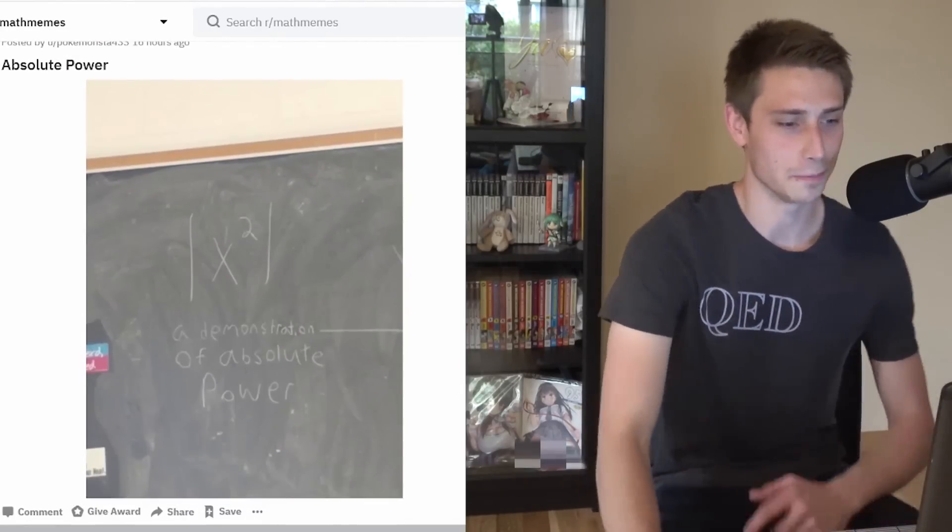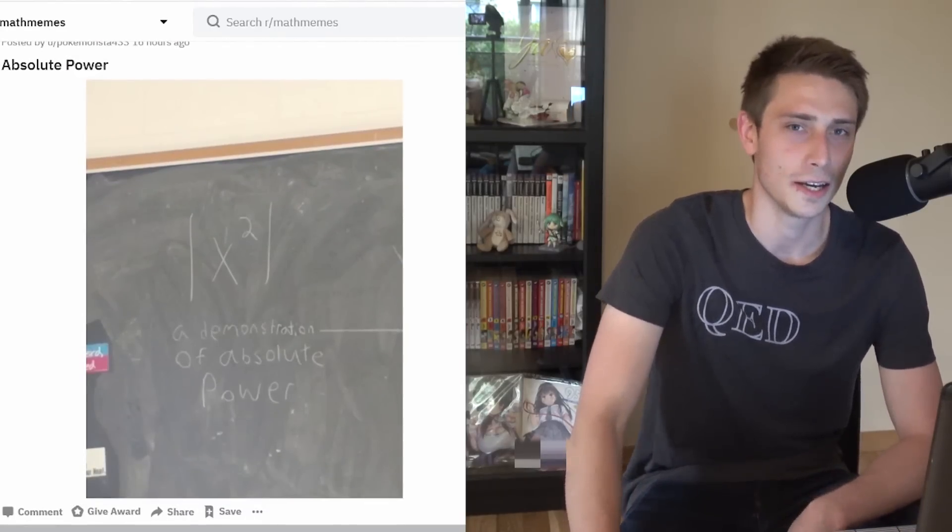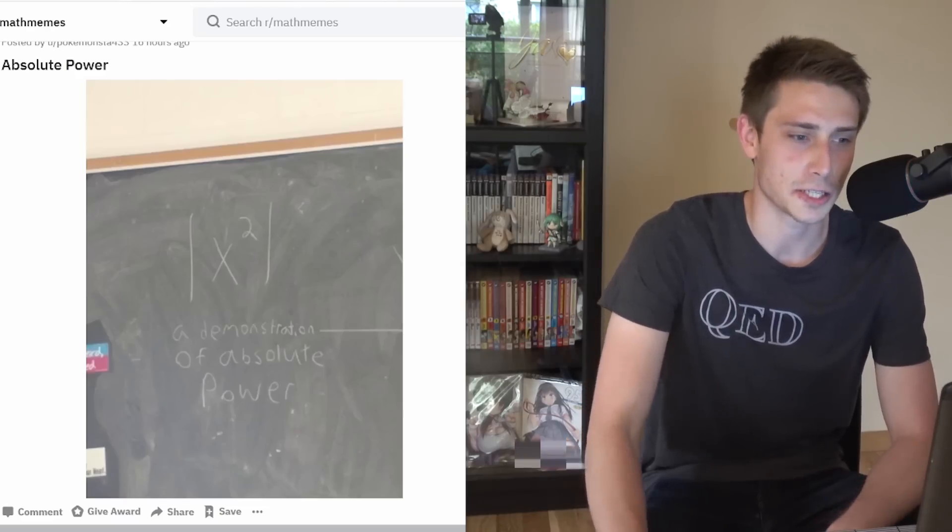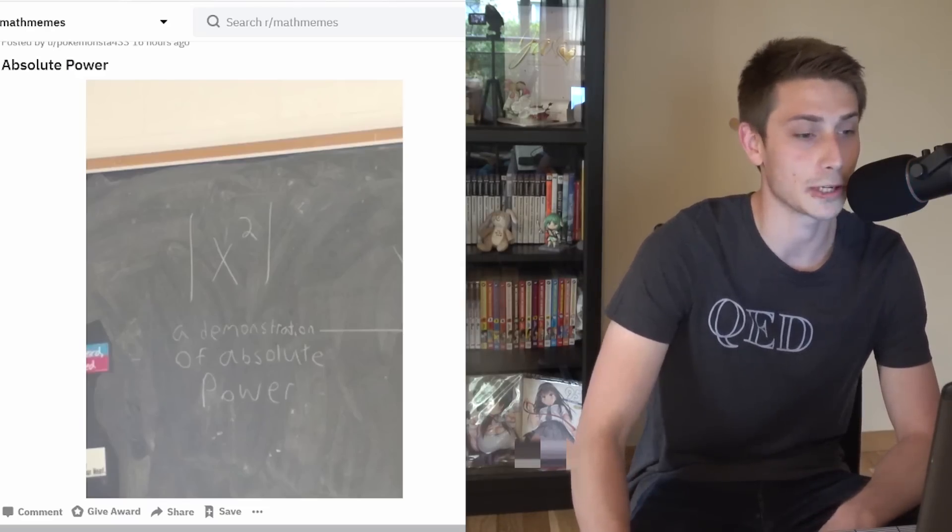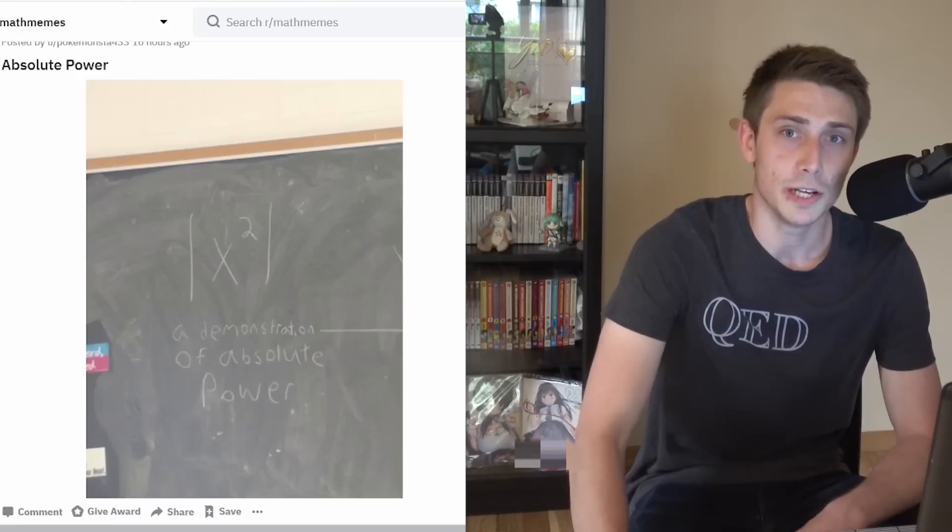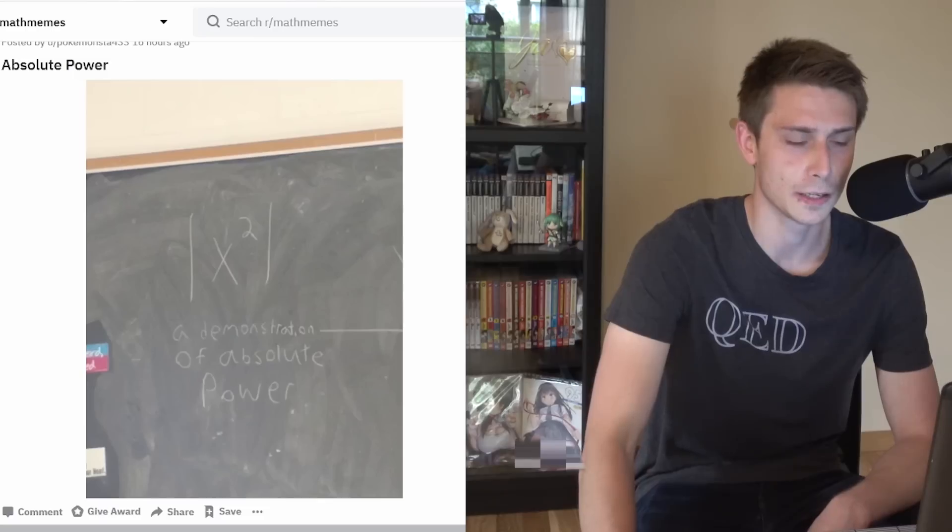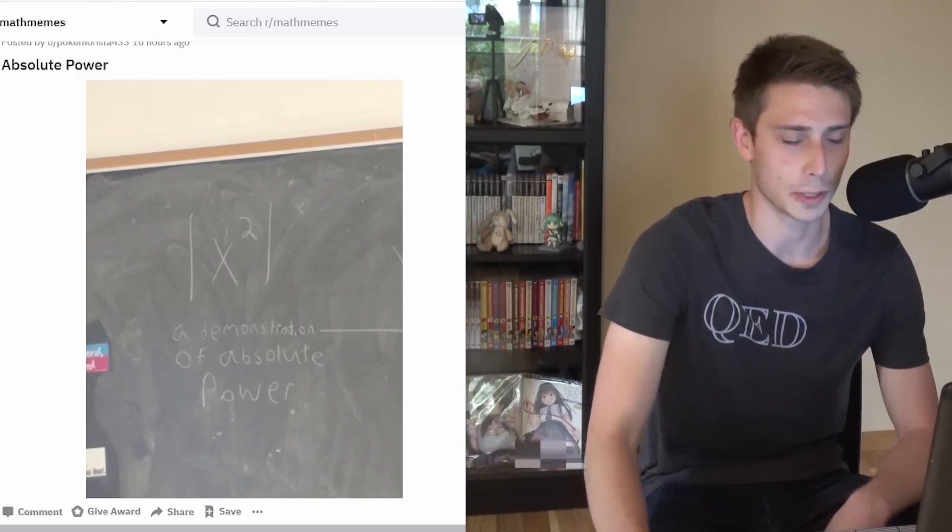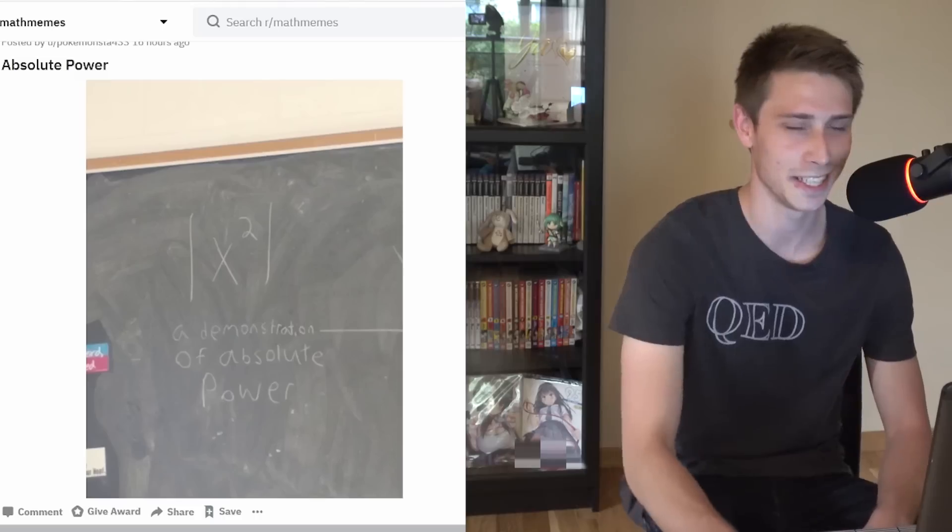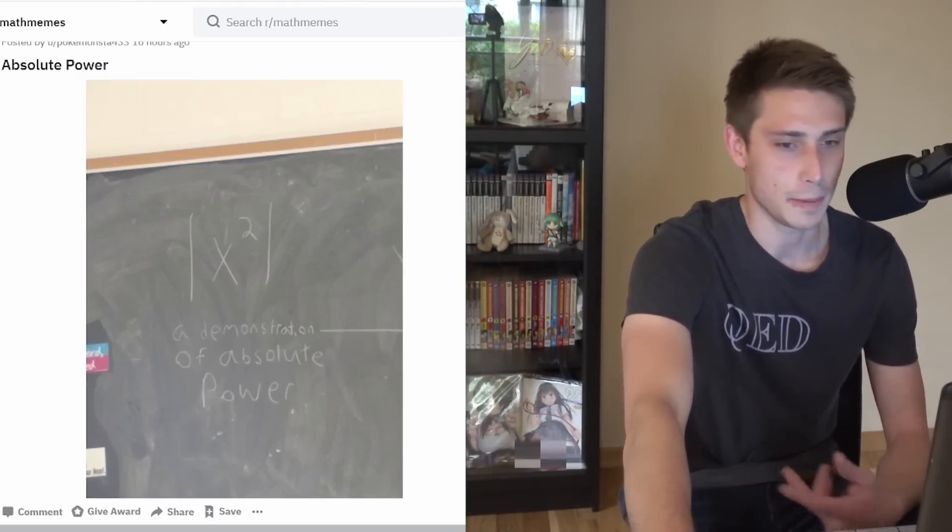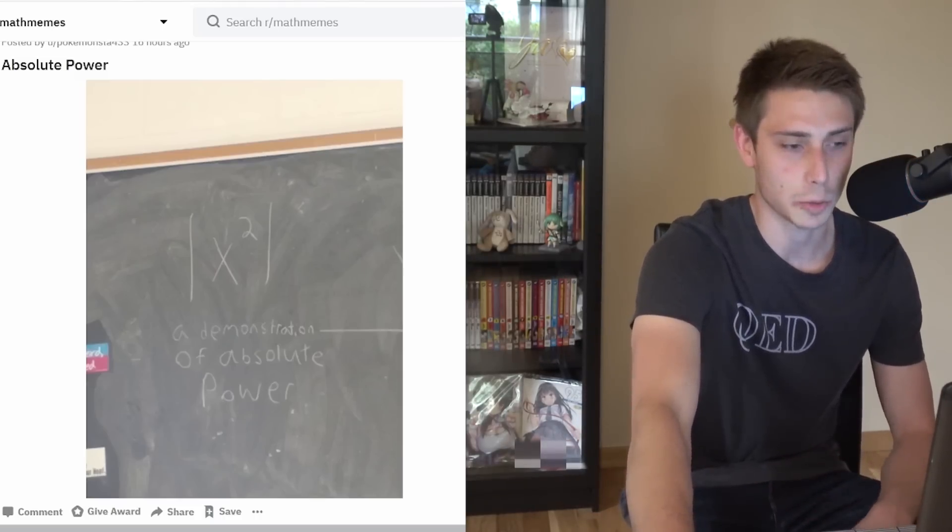Absolute value of x squared. A demonstration of absolute power. I think that's actually funny because you can use the multiplicative property of the absolute value to break this up into the absolute value of x times the absolute value of x, which is absolute value of x squared, so you can bring the power to the outside. That's probably the joke behind it.